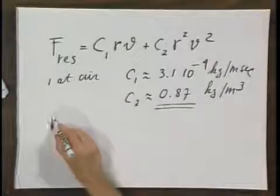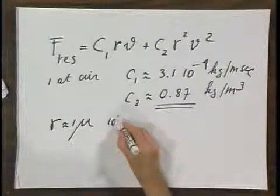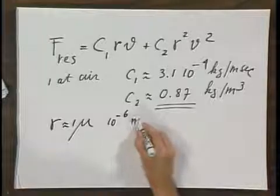I take a very small oil drop. The oil drop has a radius of about 1 micron, which is 10⁻⁶ meters.